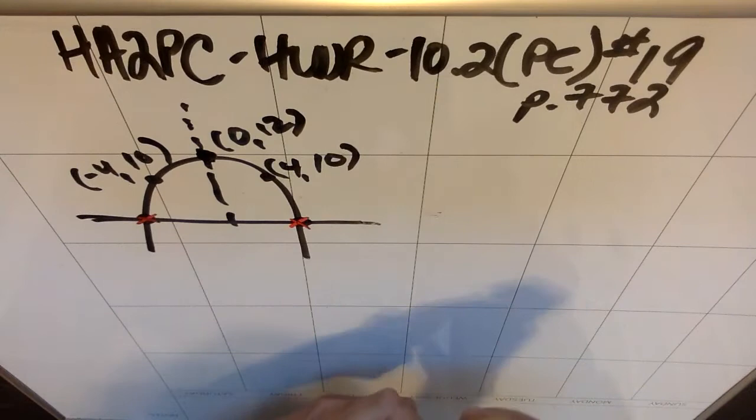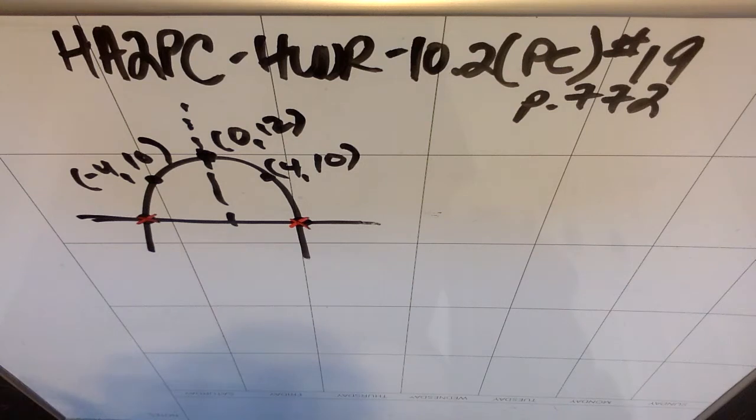The easiest thing in my opinion, and there's probably other ways to do this, but the easiest thing is to use these three points to find the equation for this parabola, and then once I know the equation for this parabola,